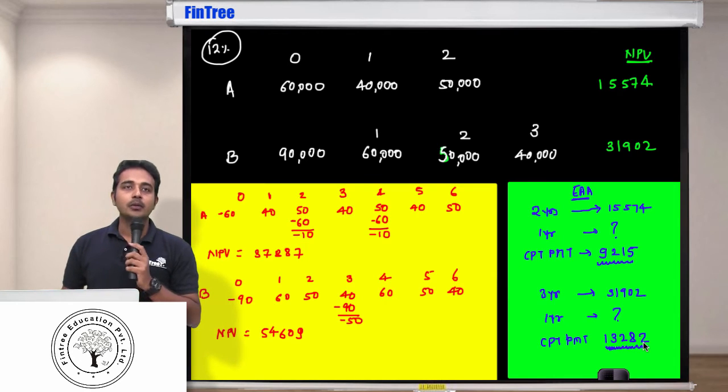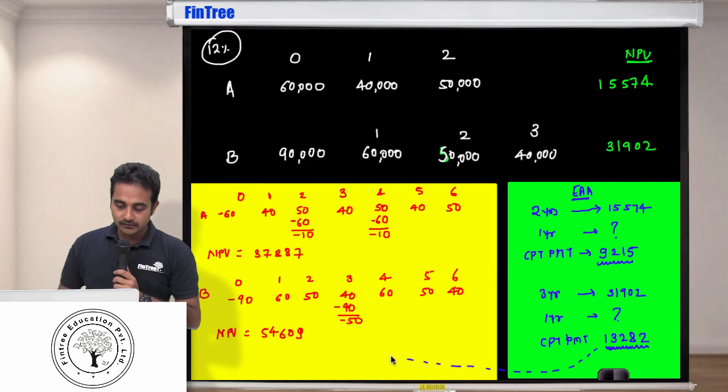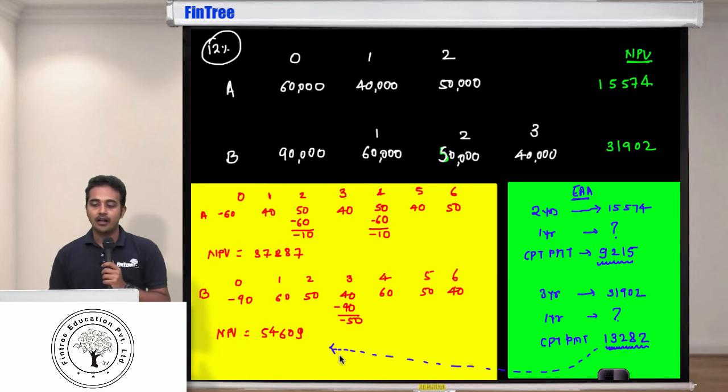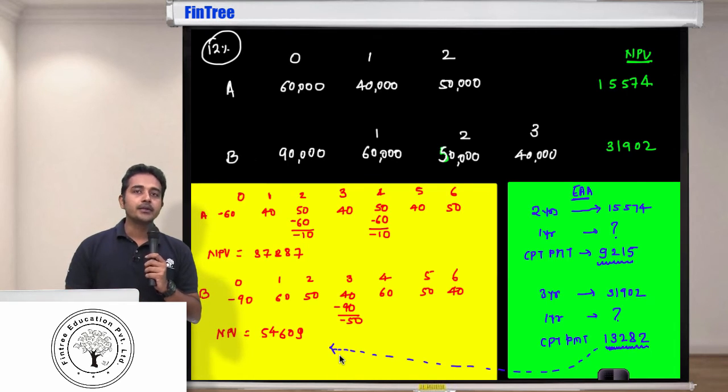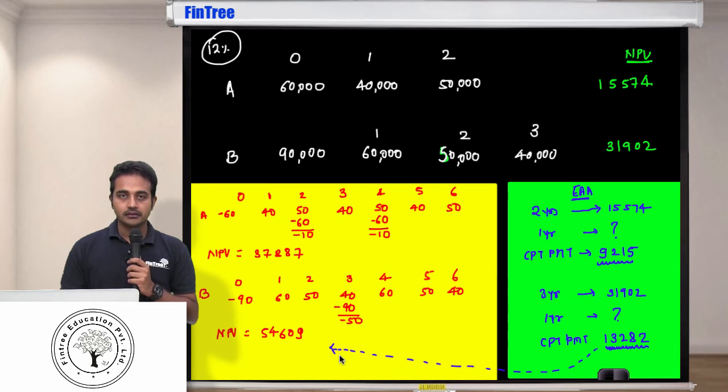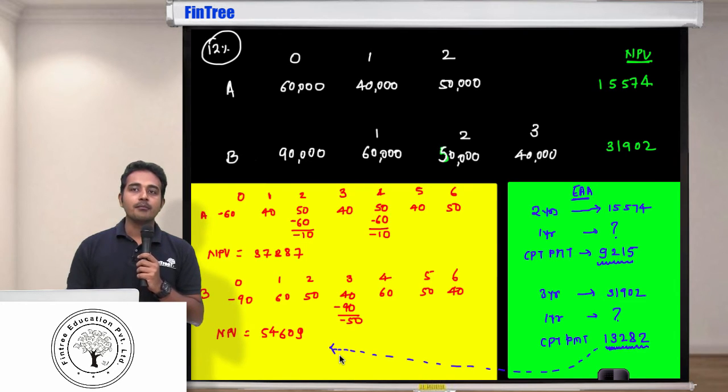Now how are these methods linked with each other? So what you do now is say second clear TVM. Second clear TVM. 13,282 payment, 13,282 payment, 6 N, 12 I/Y, compute present value.